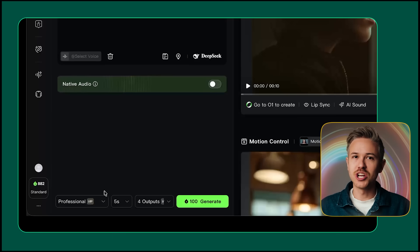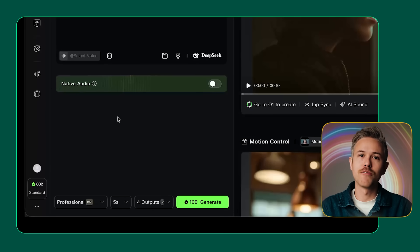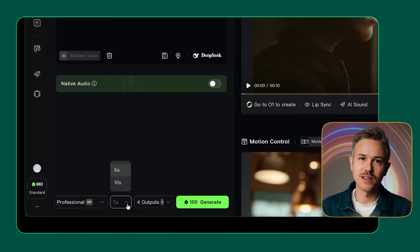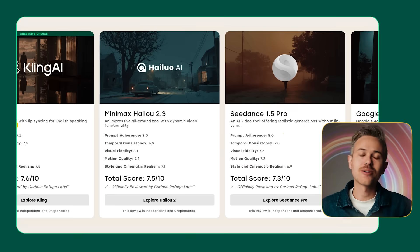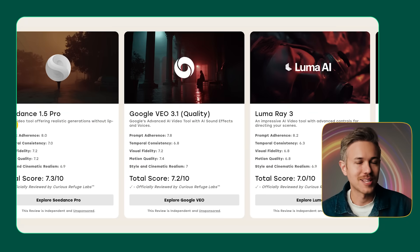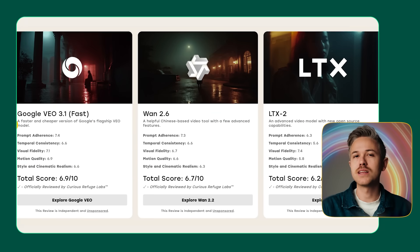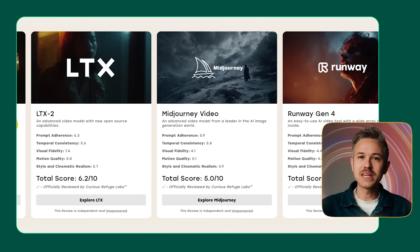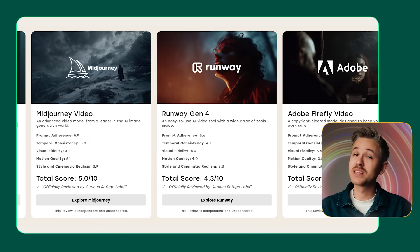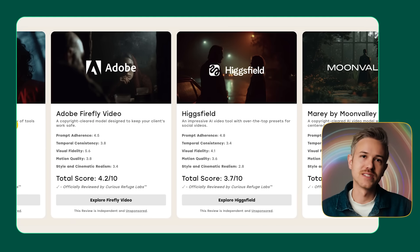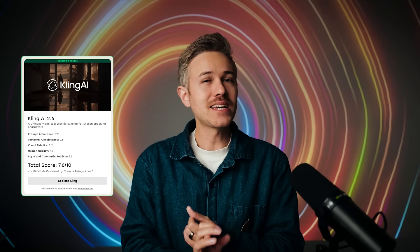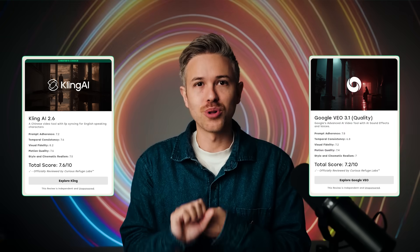It all starts with generating the core shots for your specific film project. There are a lot of AI video models out there online — we actually meticulously rate them over at Curious Refuge. You'll find a link below this video to the latest scores from Curious Refuge Labs. When it comes to generating cinematic videos, there are really two main tools to think about: Kling and Google Veo.